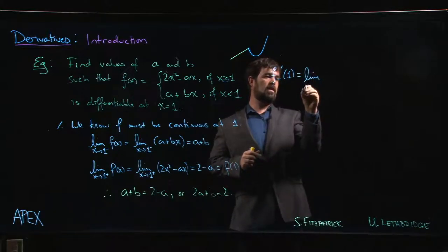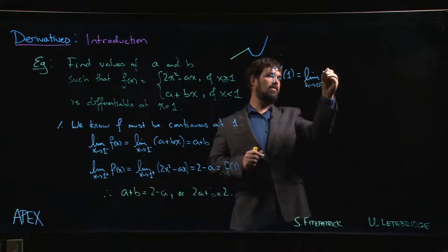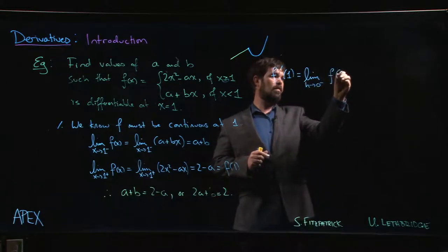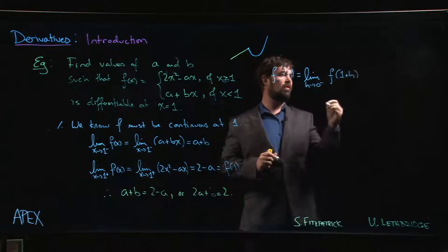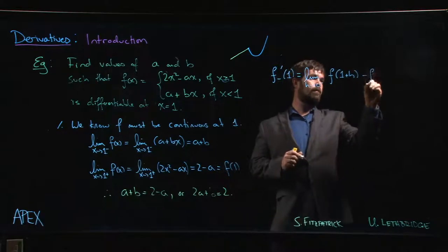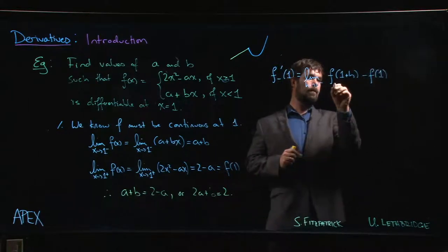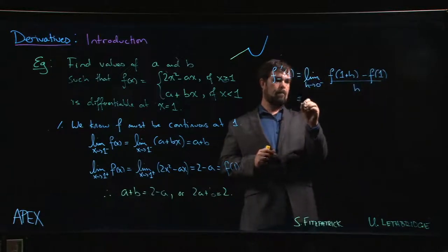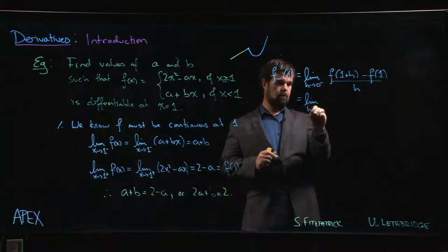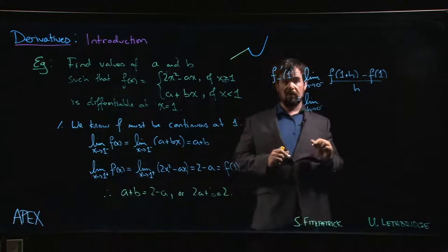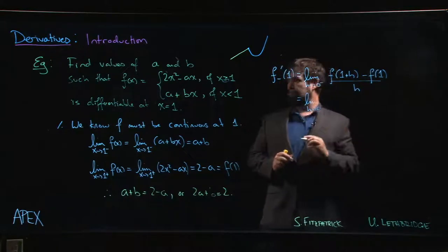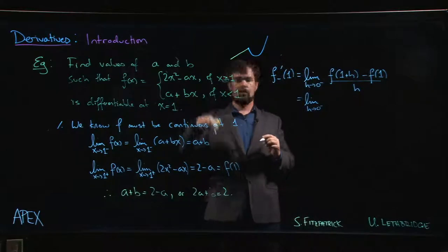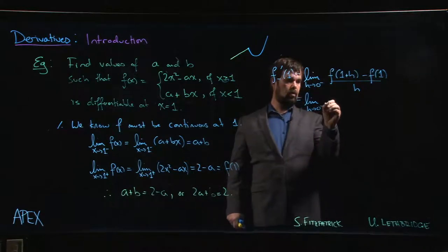So limit h going to zero from the left: [f(1+h) - f(1)]/h. Now because h is less than zero, 1+h is less than one, so we need to use this expression here.